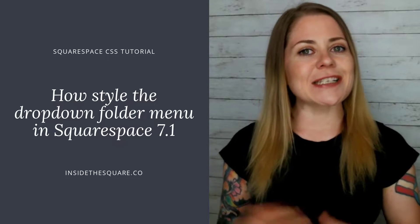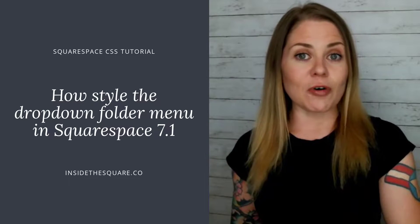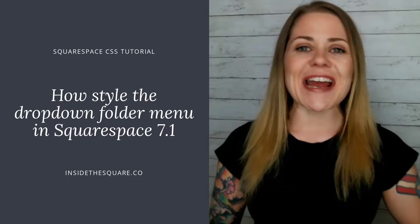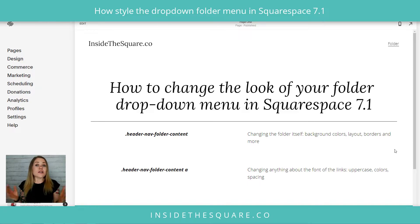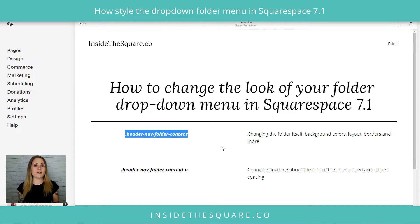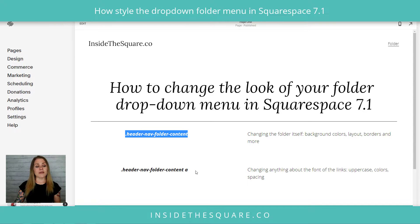If you're on the latest version of Squarespace 7.1, you're in the right place. There are two simple code names we're going to use today to change the look of the folder as well as the links within the folder. Here in my demo site you'll see I have a folder on the top right-hand side with three pages inside of it. That folder itself goes by the name 'header nav folder content'.